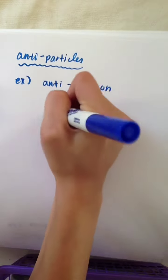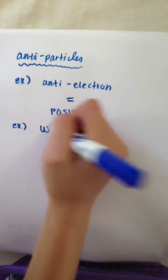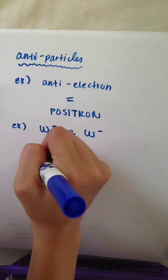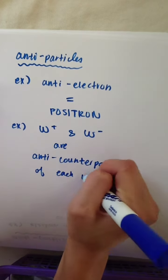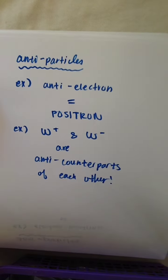So I've mentioned antiparticles several times so far, but haven't really explained them yet. Every particle has an anti-counterpart with the same mass and spin, just with a different charge. For example, the anti-electron is called a positron, an electron with a positive one charge, and the W plus and W minus bosons are antiparticles of each other. The anti-quarks also come in anti-colors.